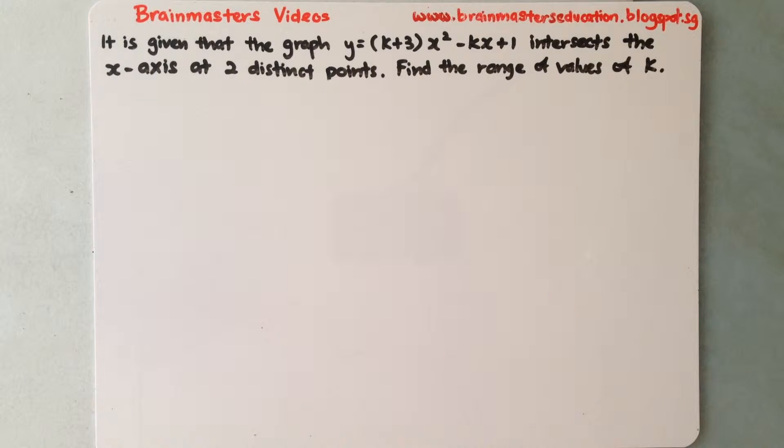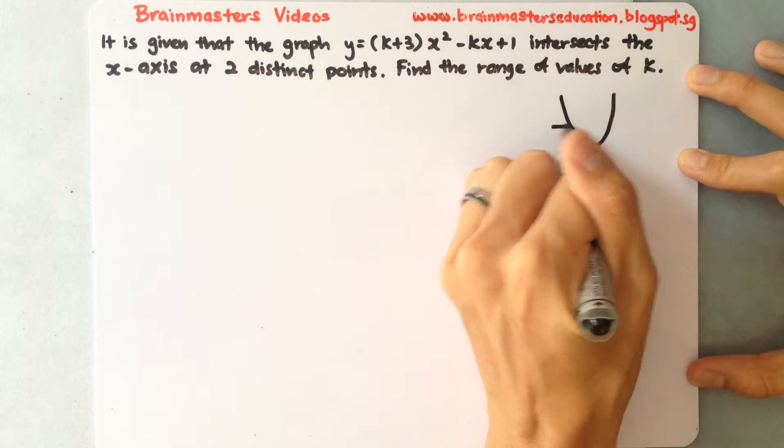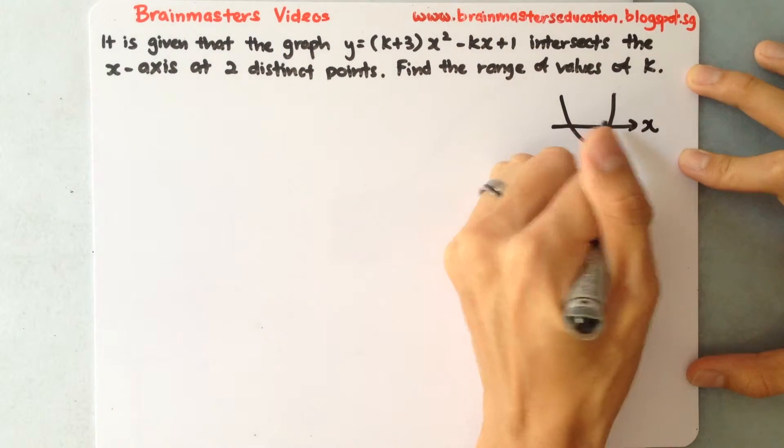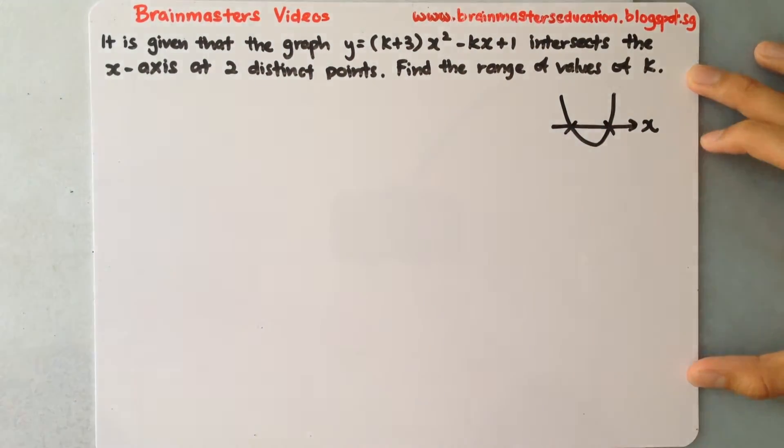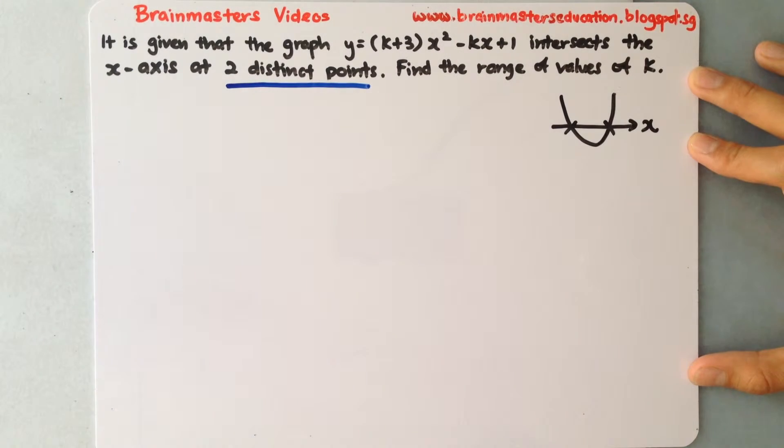Let us now understand what the question actually says. It says that the graph intersects the x axis, and it cuts at these two points. So that's why in the question it says it cuts at two distinct points, and from this phrase we will know the discriminant will be more than 0.